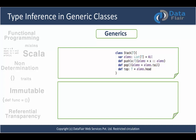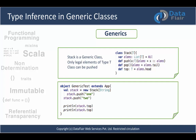Stack is a generic class because we can create multiple types of it — a stack of String, a stack of a User class, or a stack of anything Scala offers. If you instantiate your Stack class with type String, you will only be able to use its methods with String. Let's take a look at the implementation.